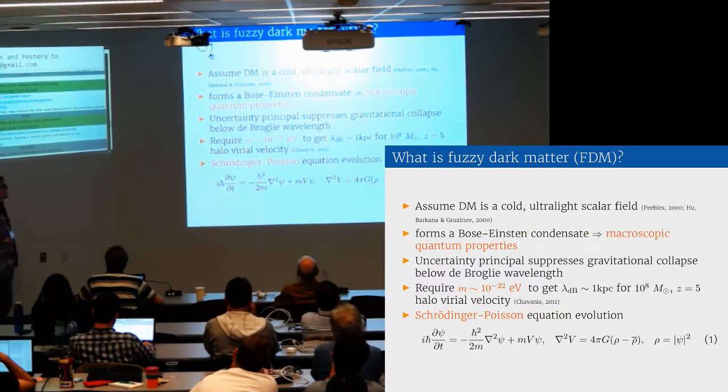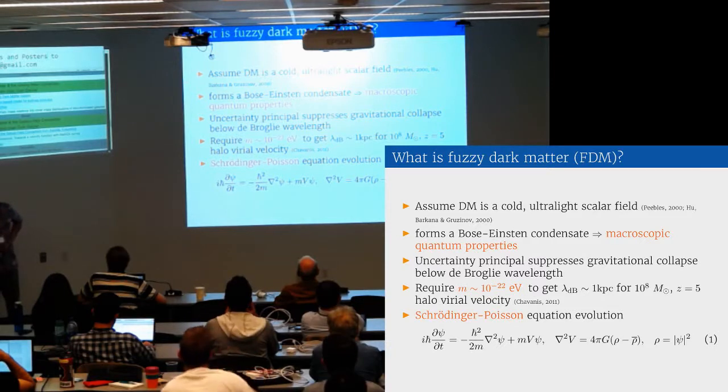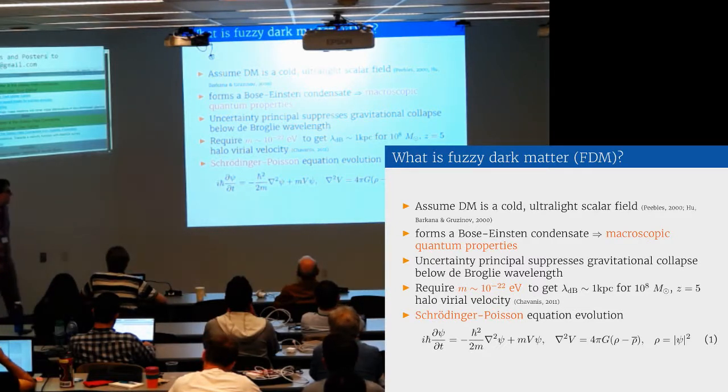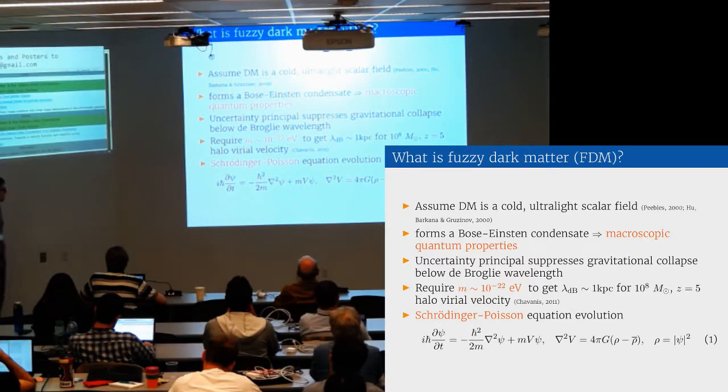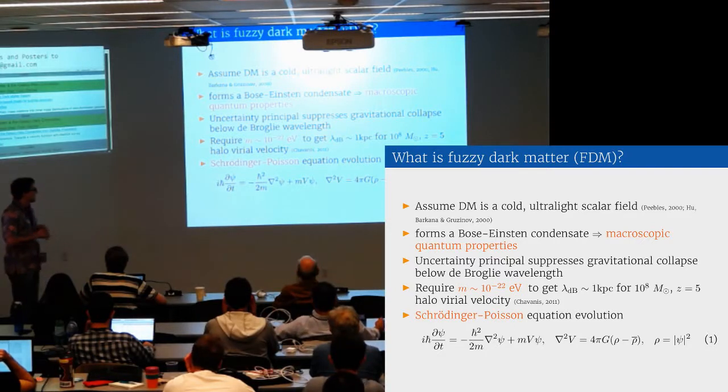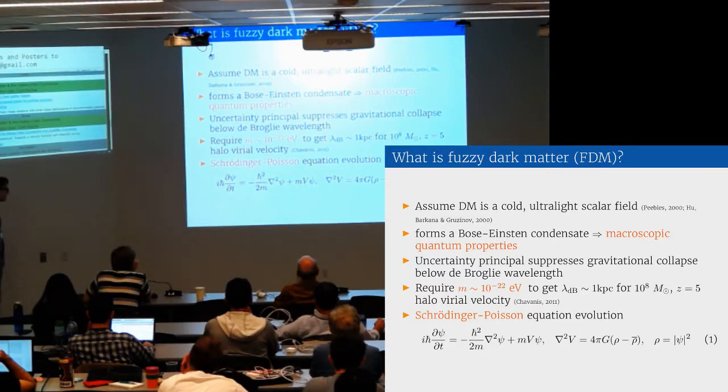Here we are assuming that dark matter is an ultralight scalar field. In the early universe it forms Bose-Einstein condensate with zero temperature, and because the particle mass is so small, it has a de Broglie wavelength that is on order kiloparsec and starts affecting cosmic structure. The uncertainty principle basically suppresses gravitational collapse below this de Broglie wavelength. The equations for the scalar field reduce to the Schrodinger-Poisson equations in the non-relativistic limit. The dark matter scalar field is described by this complex wave function psi, normalized such that psi squared gives the dark matter density.